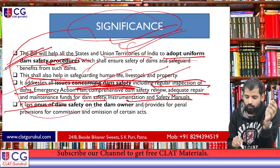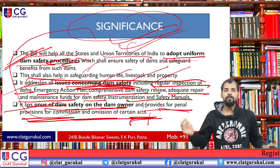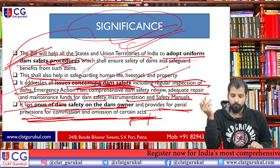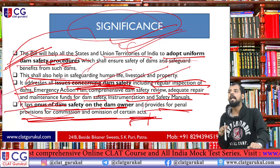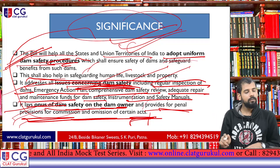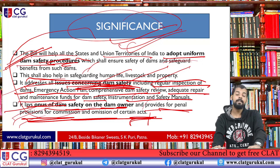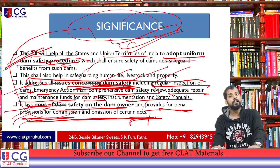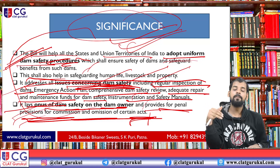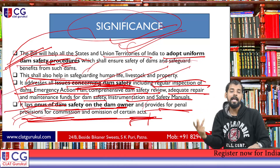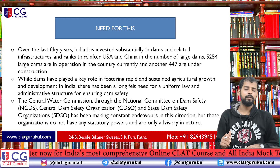The bill lays the responsibility of dam safety on the dam owner and provides penal provisions for acts of commission and omission. The owner cannot escape liability for constructing a deficient dam, as the bill includes provisions for penalties and punishment for certain negative acts by the dam owner. These are the key significance points of this bill.